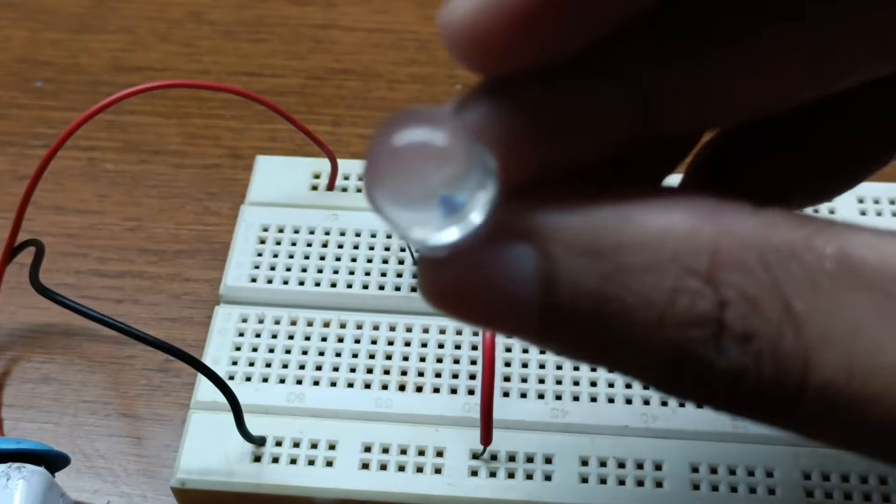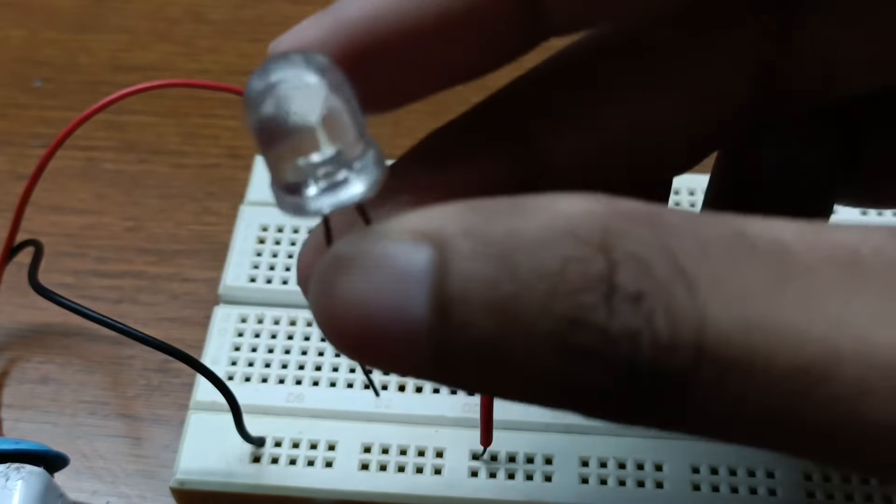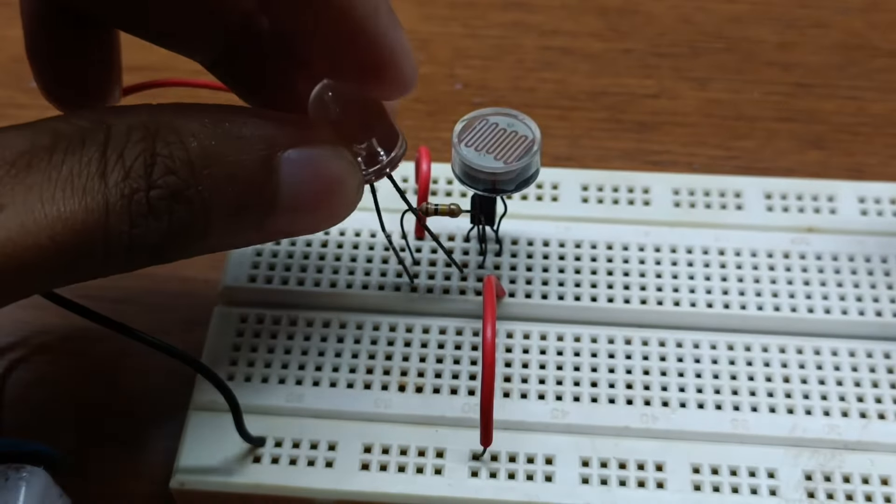Connect the anode of the light emitting diode to the positive side of the battery and the cathode to the collector of the BC 507 transistor.